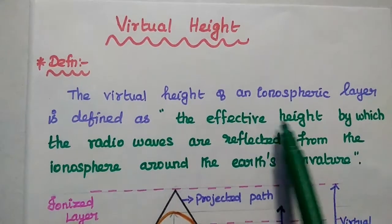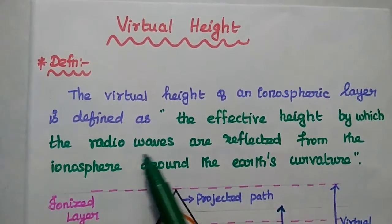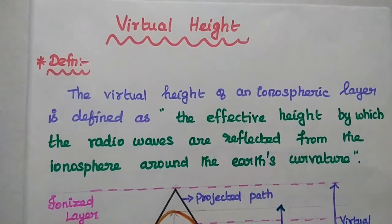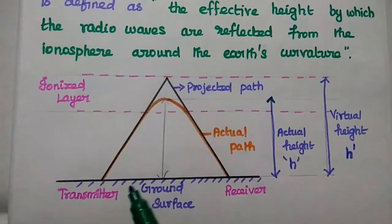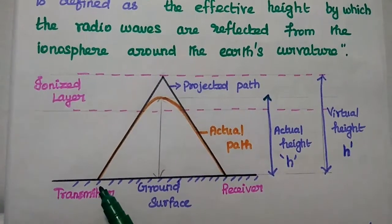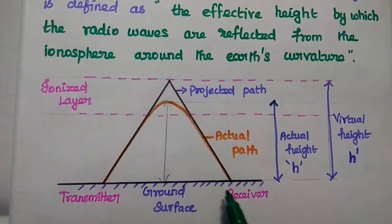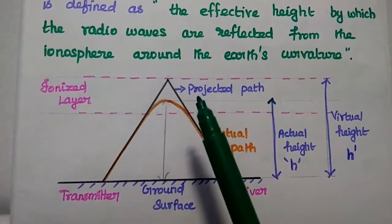So it is the effective height at which the radio waves are reflected. Consider this diagram. We are going to transmit the radio wave from this transmitter to this receiver through this ionospheric layer.